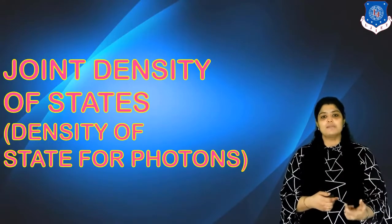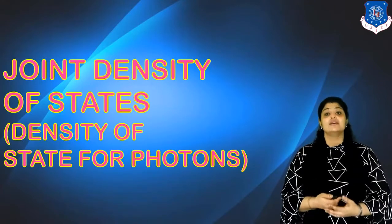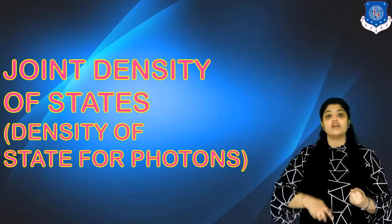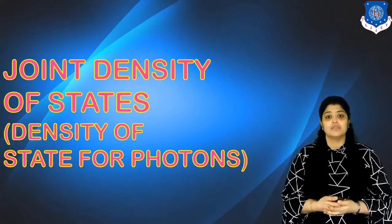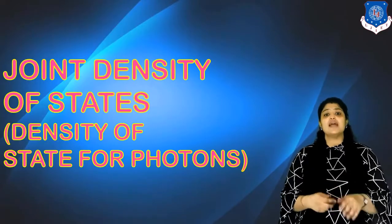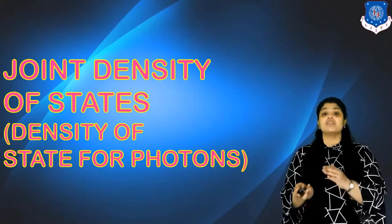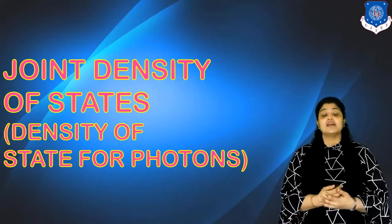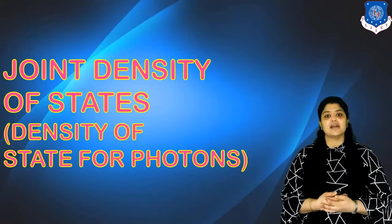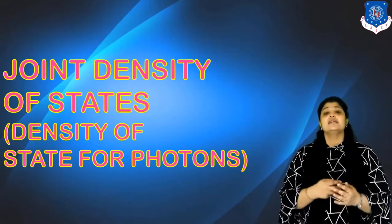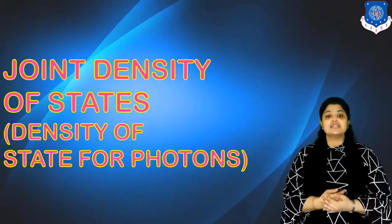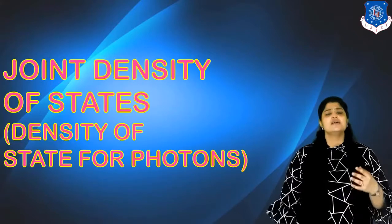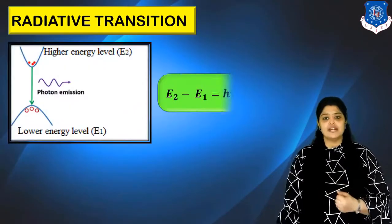Because we are using the word 'optical', there has to be an interaction with light. So we are dealing with processes where either photons are absorbed or photons are emitted. Before I start with the topic, I would like you to recall what radiative and non-radiative transitions are. We covered these topics while discussing the EK diagram and direct-indirect bandgap semiconductors, as well as direct and indirect recombination in semiconductors.